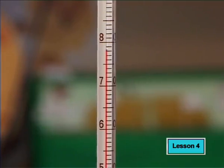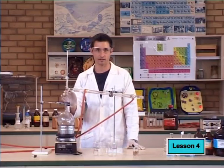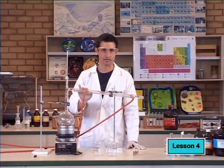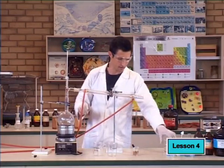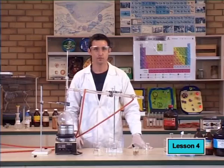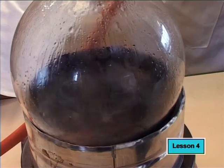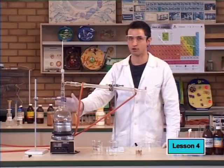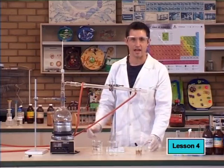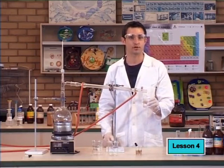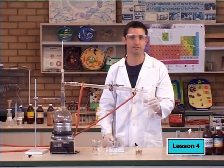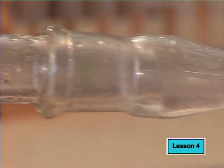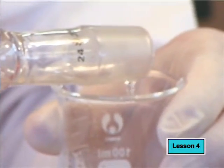The ethanol boils off easily at 78 degrees. The mixture will boil past the thermometer and into the condenser where it will turn into a liquid and collect here. We'll continue to heat the mixture. Can you see the alcohol boiling off on this side? As we start to collect the part which boils at around 140 to 145 degrees, we start to see and smell a different product.